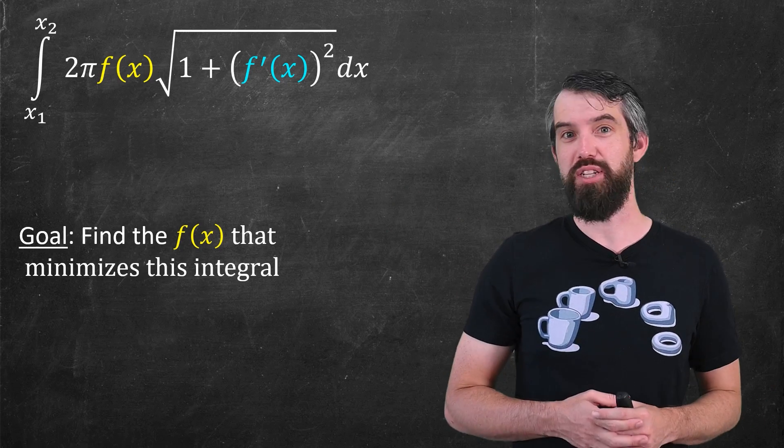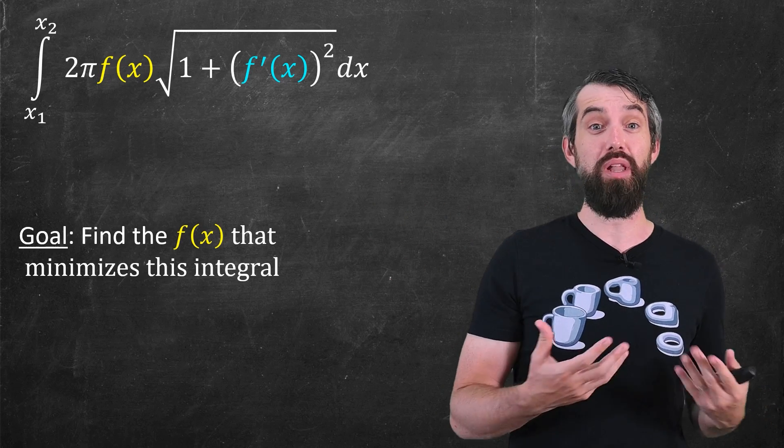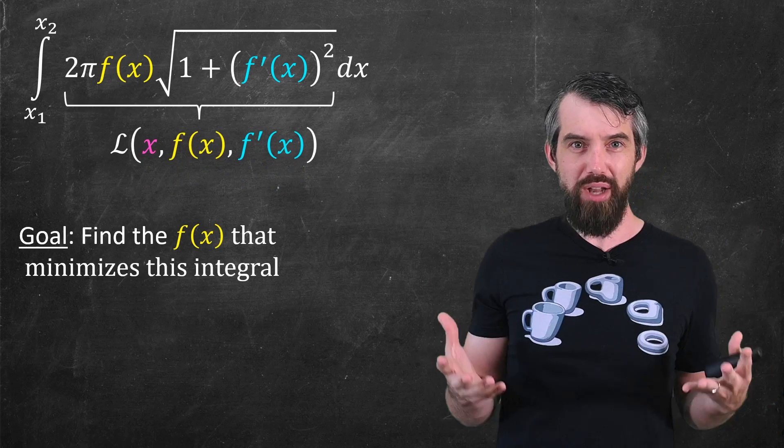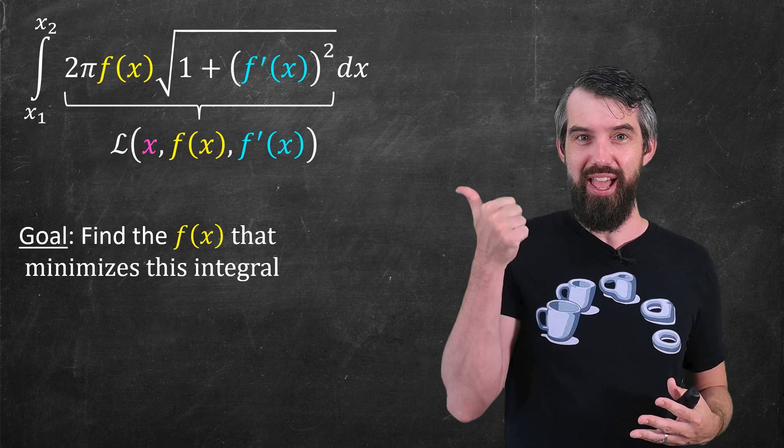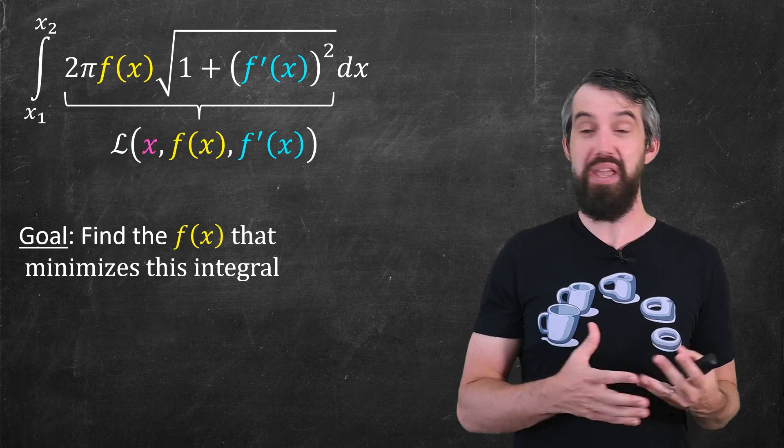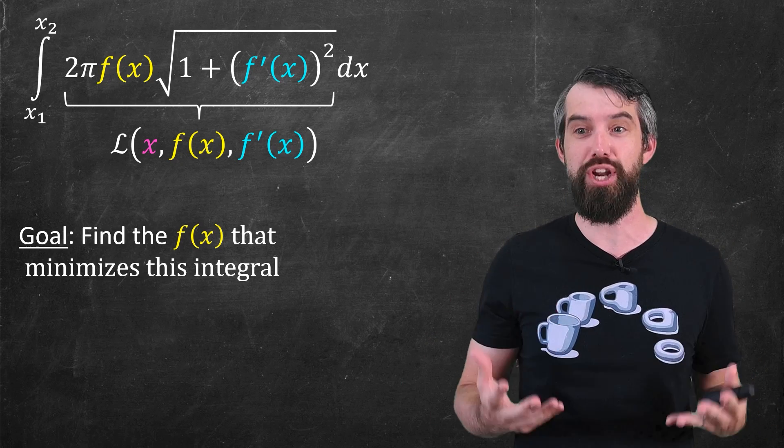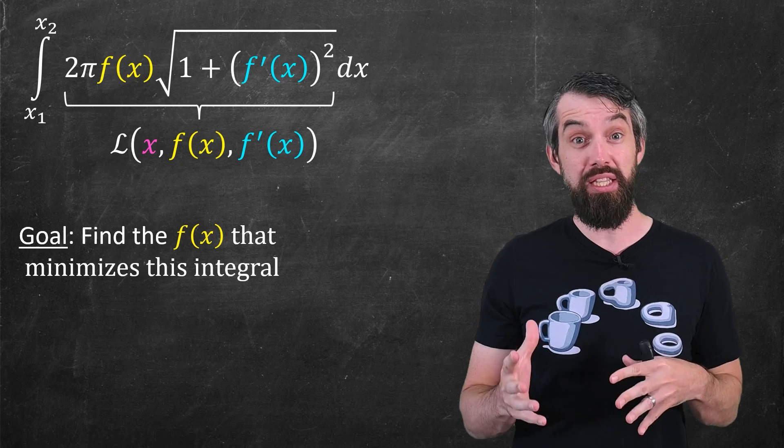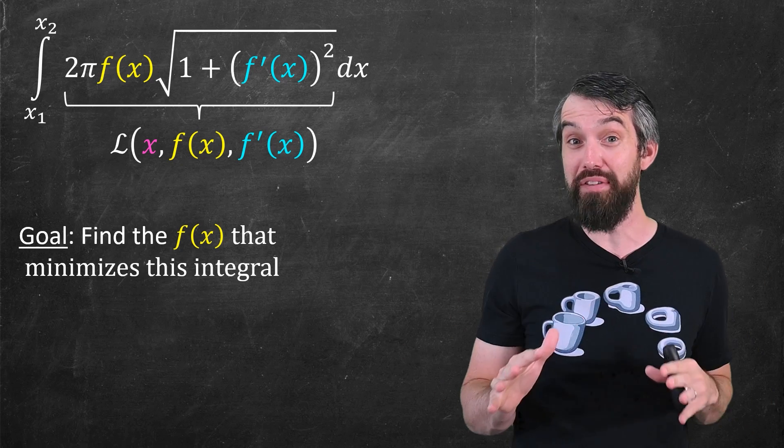We may as well be a little more general than our specific example. The integrand that we have is one example of a broader class of integrands that are called Lagrangians. And a Lagrangian is just some expression that's a function of the independent variable x, a function f(x), and the derivative of the function f'(x). We have our very specific one that came from our specific context, but we're going to answer this problem in more generality for arbitrary Lagrangians. By the way, many very important and interesting Lagrangians come to us from physics, so this kind of generalization is going to have a lot of different applications.